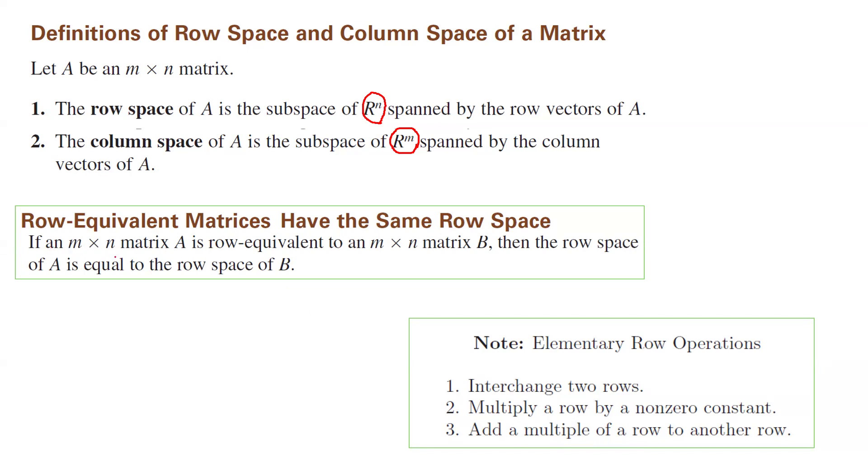If an m by n matrix A is row equivalent to an m by n matrix B, then the row space of matrix A, the first matrix, is equivalent to the row space of the second matrix. This is the process that we're going to follow.